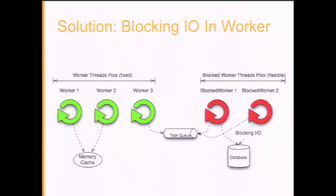If one worker thread is performing a blocking IO operation, it is necessary to separate that logic and perform it not in the worker thread but in a thread from another thread pool — a blocked worker thread pool — with communication mediated by a task queue. In contrast to the worker pool, the size of this blocked worker thread pool is typically flexible, because threads inside it do almost nothing — they just wait until the blocking operation is done — so the number of threads can be quite large.